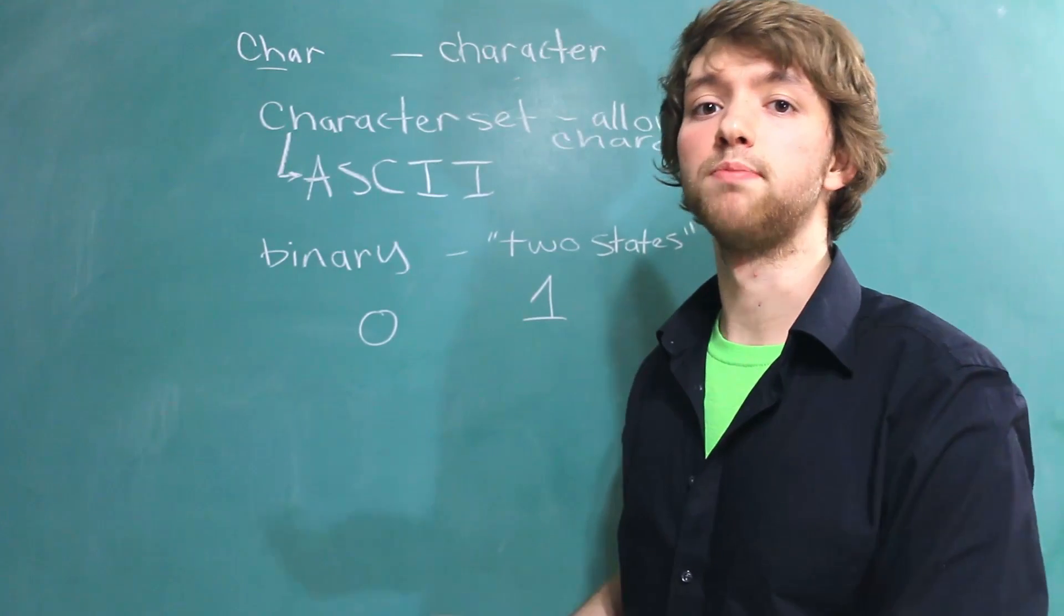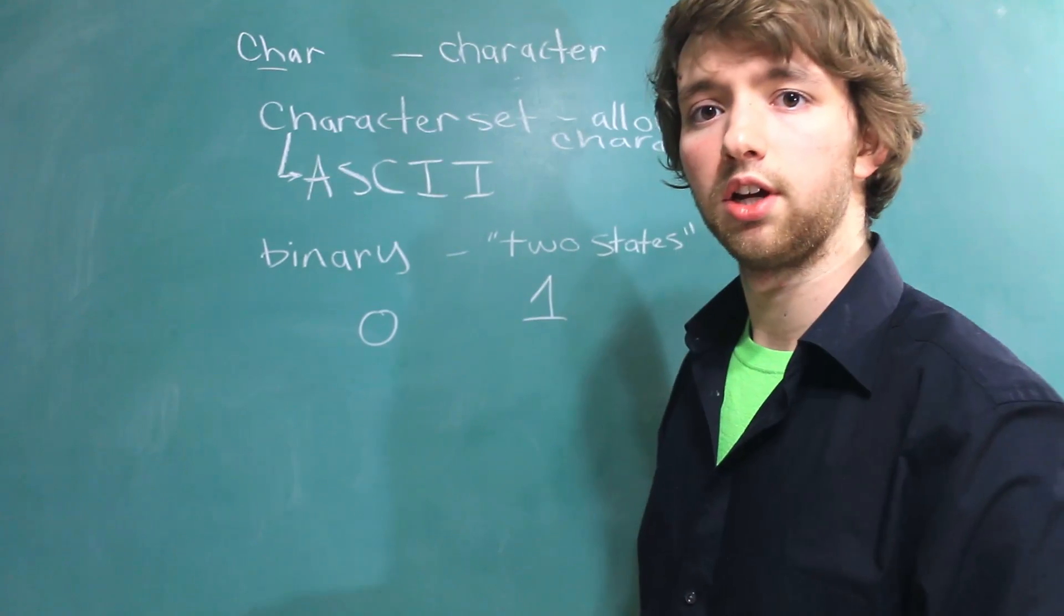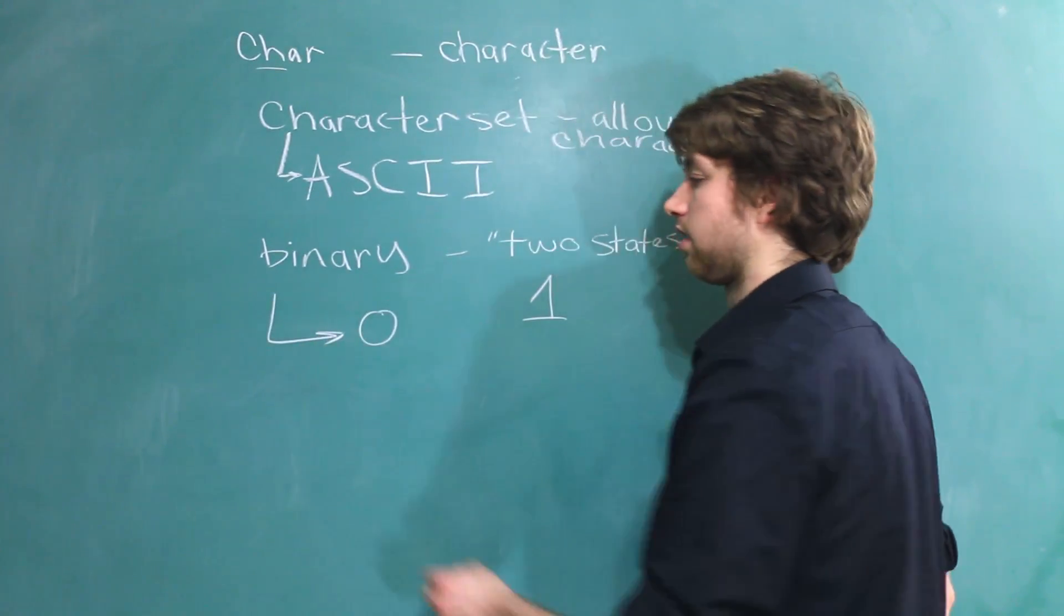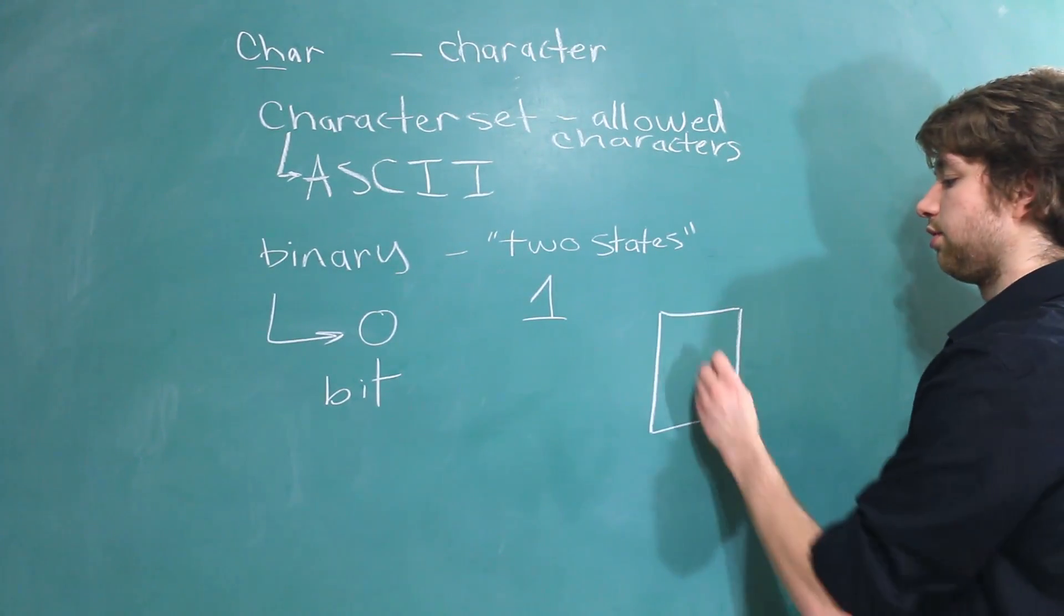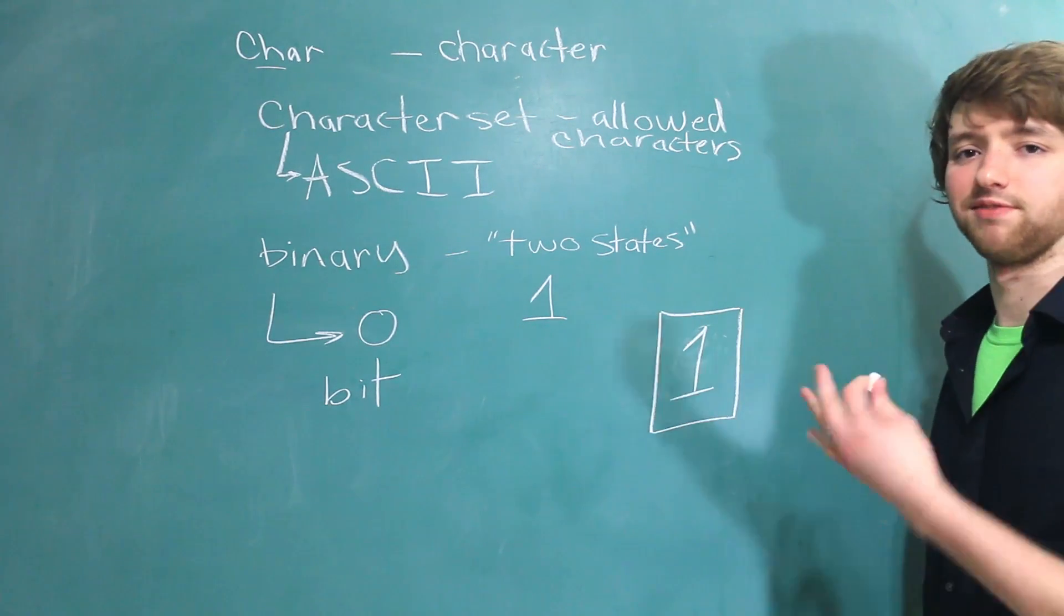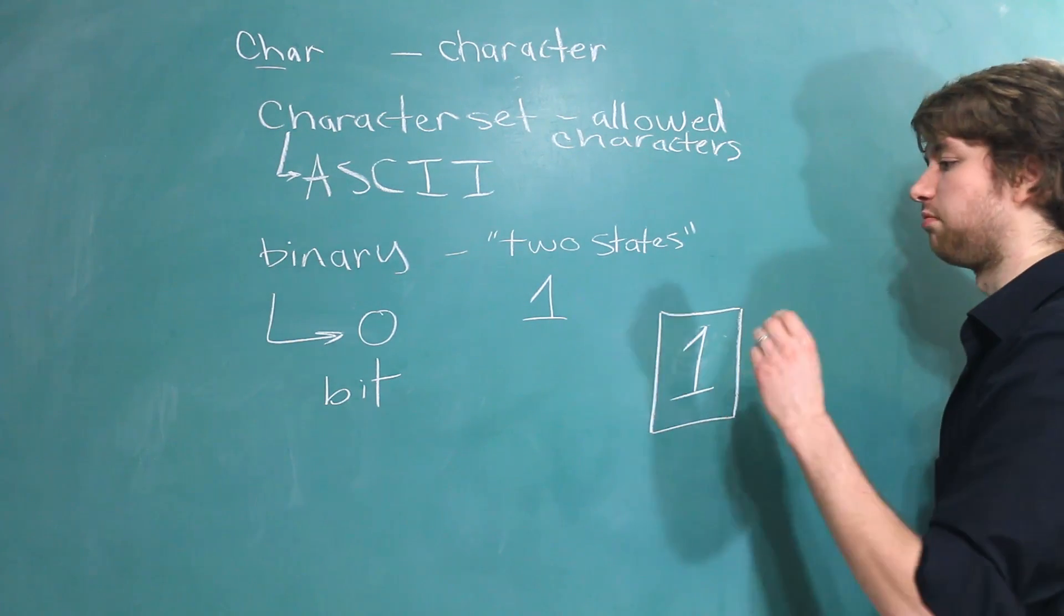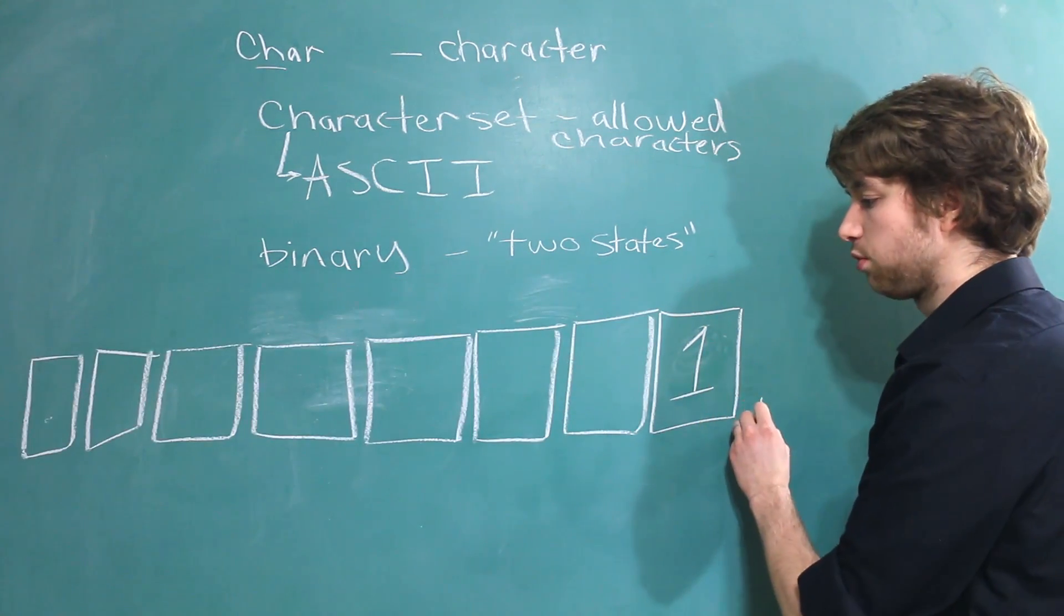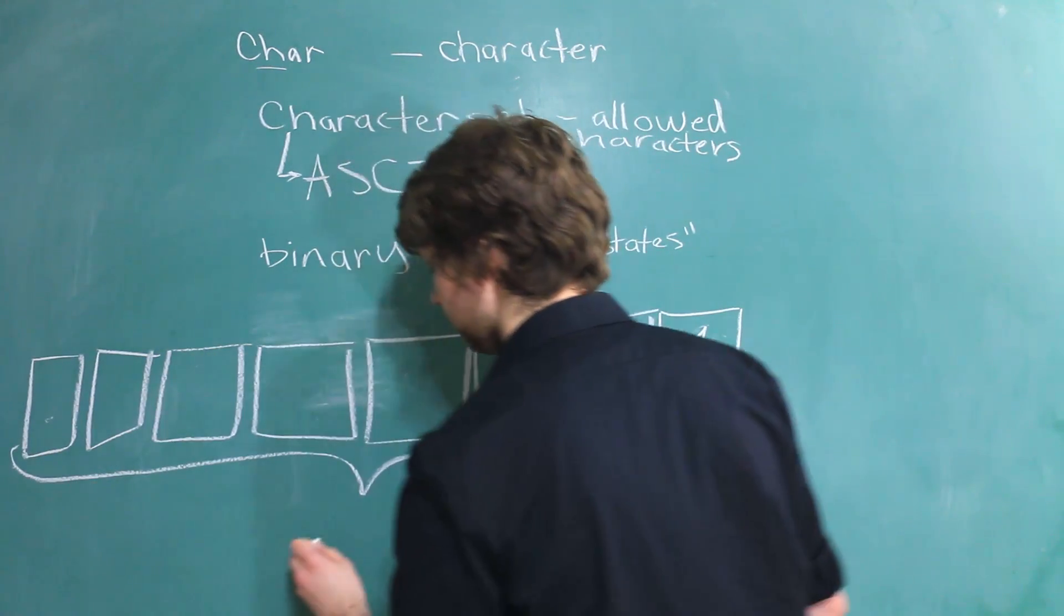But, in computers, we use binary to represent numbers and characters and all of that stuff. So, if we just have one individual binary character like this, it is called a bit. So, an individual bit can be either a zero or it can be a one. Now, having only two options isn't very helpful. So, to make things more complete and more complex, we can have multiple bits. For example, we could have eight bits. So, a group of eight bits is so common that it has its own name. This is called a byte.